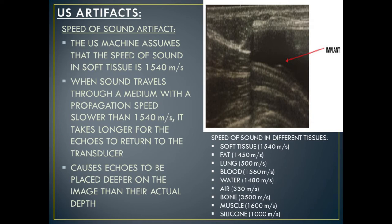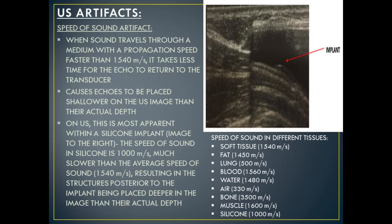When sound travels through a medium with a propagation speed slower than 1540 meters per second, it takes longer for the echoes to return to the transducer than the ultrasound machine is expecting, causing echoes to be placed deeper on the image than their actual depth. When sound waves travel through tissue with a propagation speed faster than 1540 meters per second, it takes less time for the echo to return, causing echoes to be placed shallower than their actual depth. This is most apparent within a silicone implant — the speed of sound in silicone is 1000 meters per second, much slower than the average 1540 meters per second, resulting in structures posterior to the implant being placed deeper in the image than their actual depth.